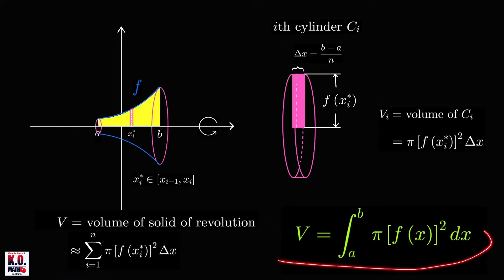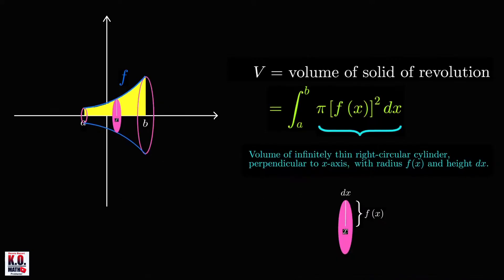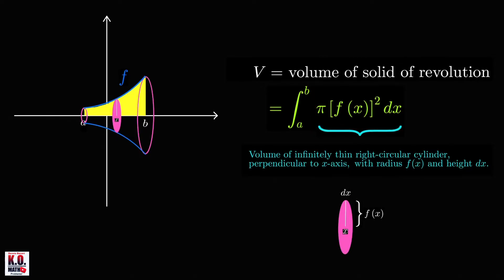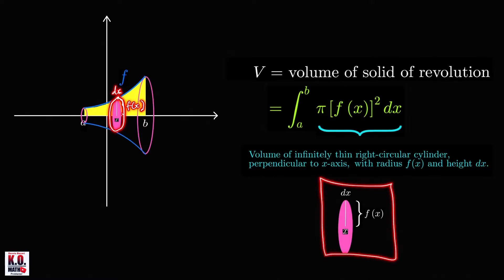There are two ways to remember this formula. First, think of this part as the volume of an infinitely thin right circular cylinder perpendicular to the x-axis, with radius f of x and height equal to dx. The thickness of this infinitely thin cylinder equals dx, as illustrated in the figure.